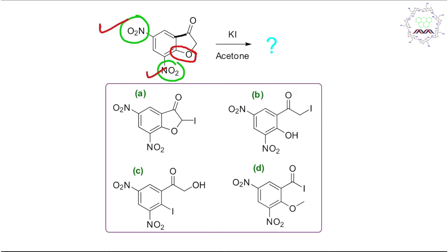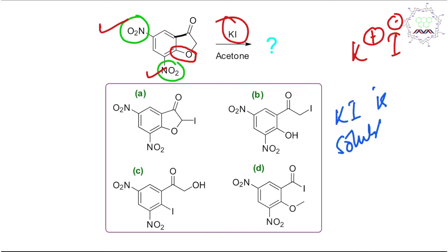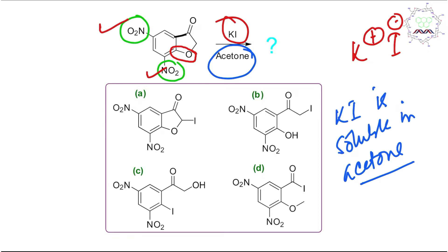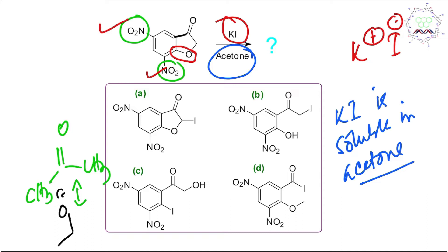Now, the question is where the reaction may happen, but first let us understand what KI can do. KI is nothing but a salt — K⁺ and I⁻. KI has a very unique property: it is soluble in acetone because acetone is a polar molecule. The acetone molecule has a canonical form where O is δ⁻ and carbon is δ⁺, so the δ⁻ oxygen can donate charge density to the K⁺ cation and stabilize it.